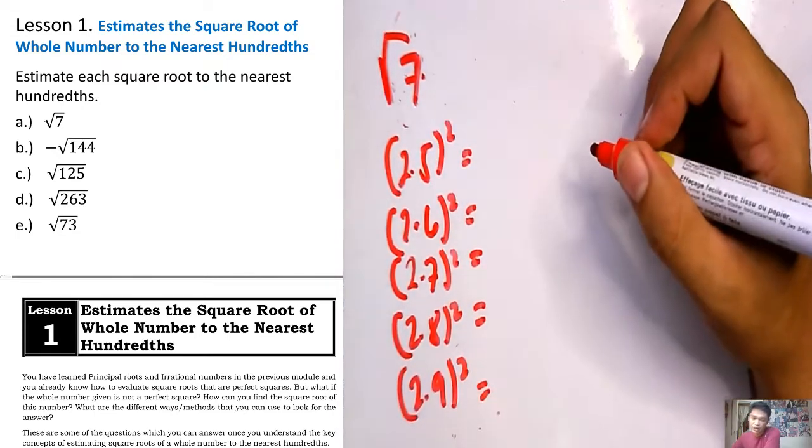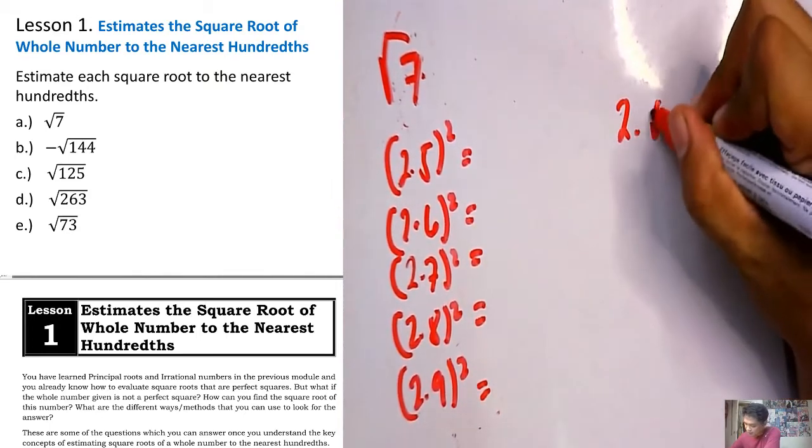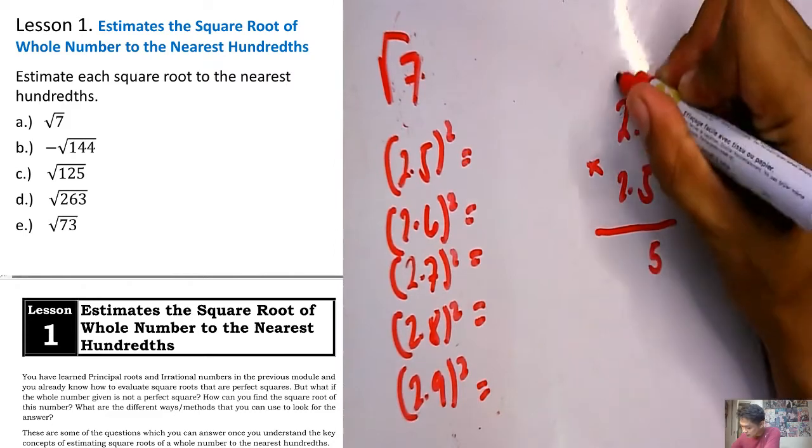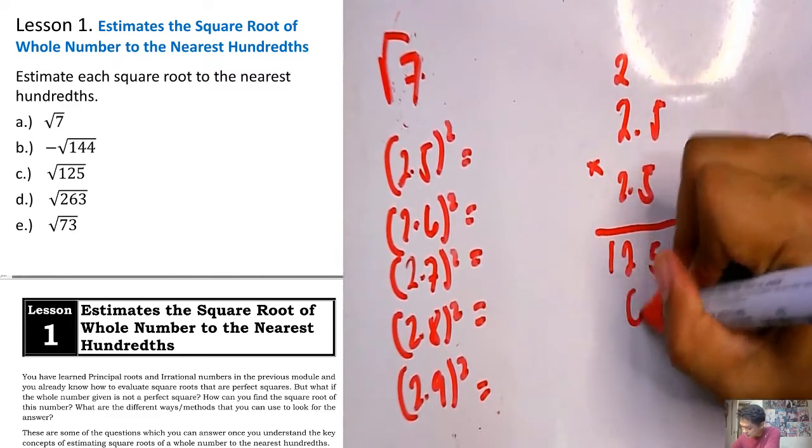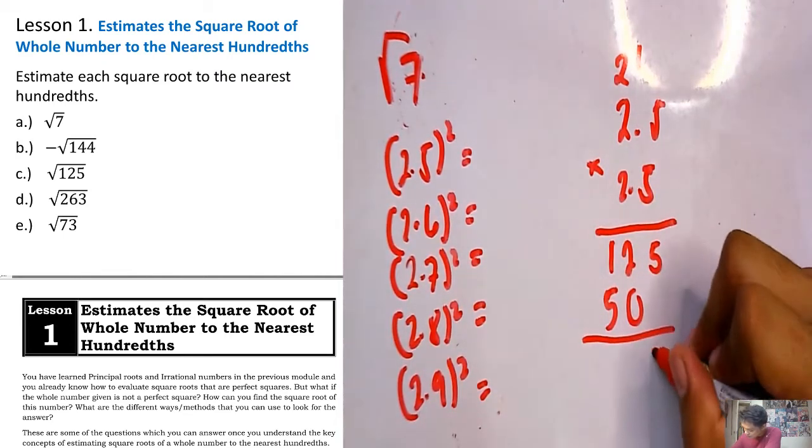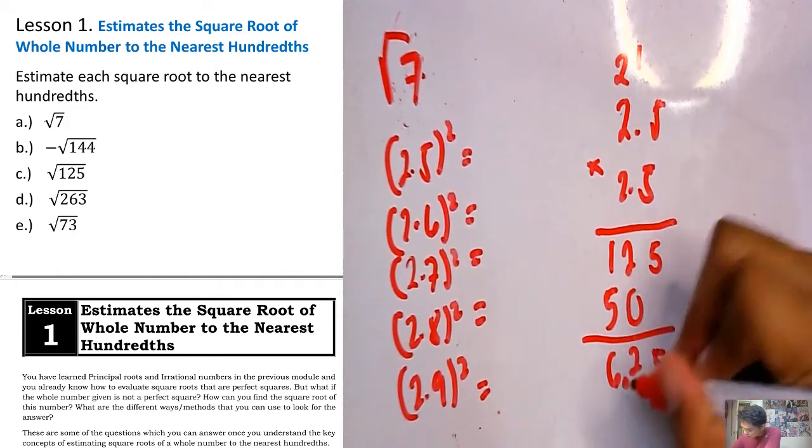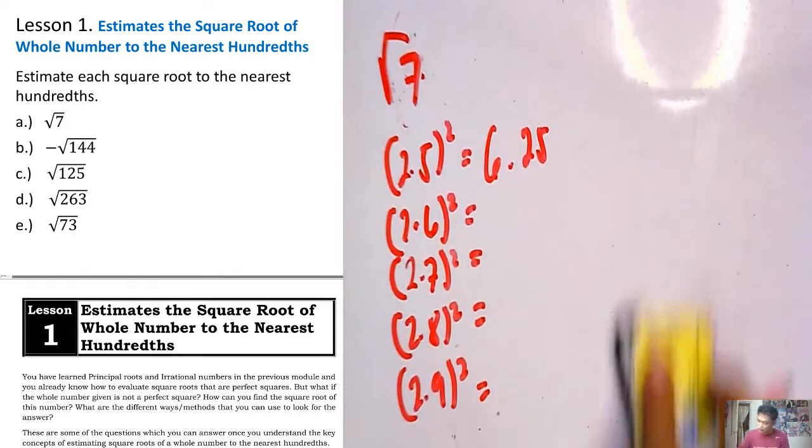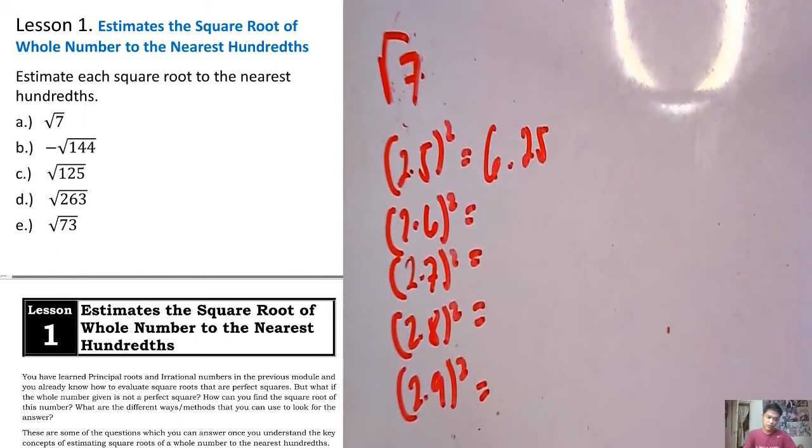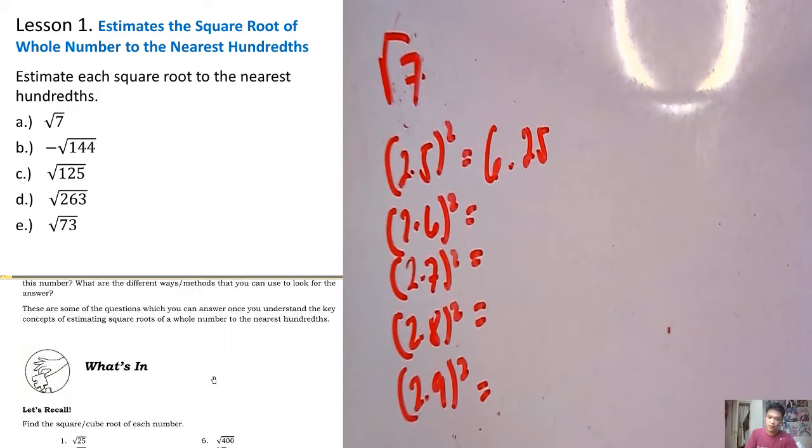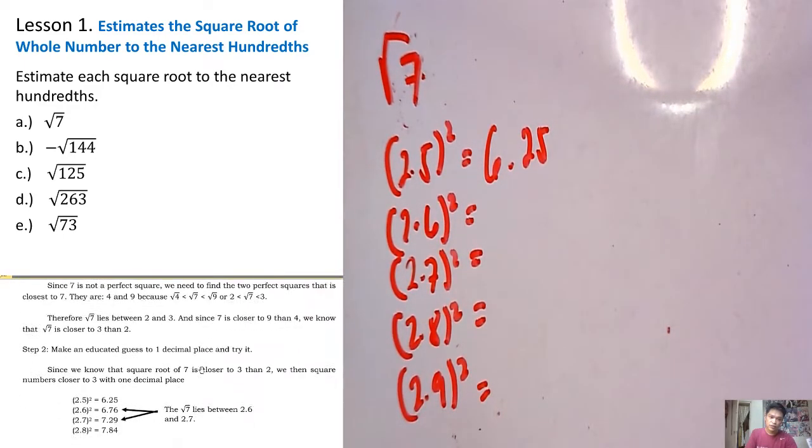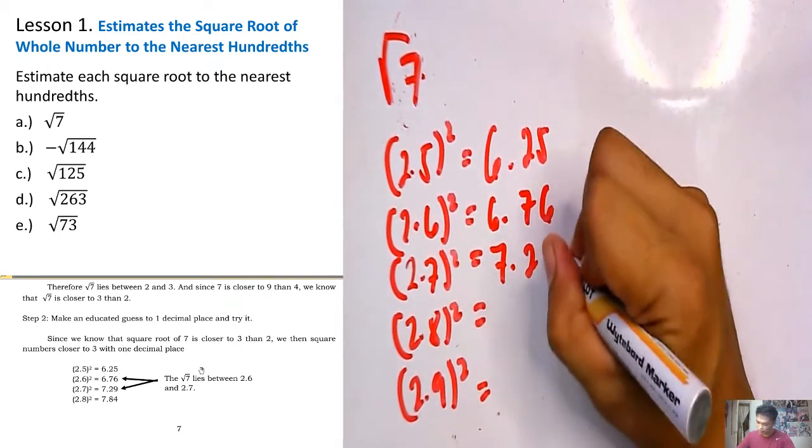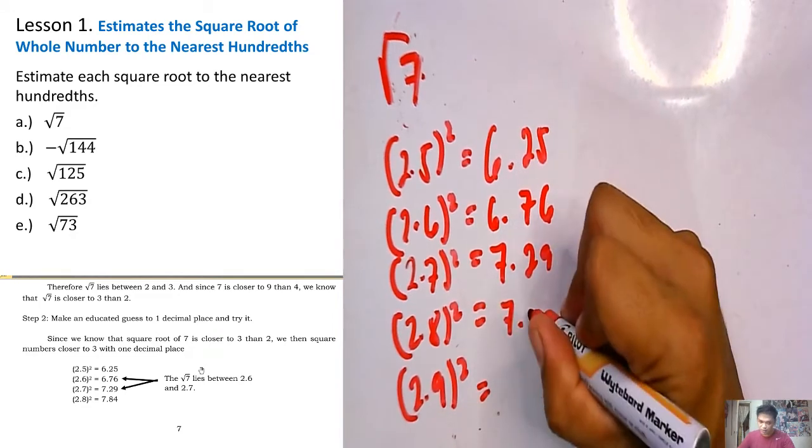If you don't have a calculator and you just know how to solve, you may use this. 2.5 squared is just 2.5 times 2.5. 5 times 5 is 25, 2 times 5 is 10 plus 2 is 12, 2 times 5 is 10 carry 1, 2 times 2 is 4 plus 1 is 5. There are 2 decimal places, so we have 6.25. 2.6 times 2.6 is 6.76, 2.7 times 2.7 equals 7.29, 2.8 times 2.8 equals 7.84.